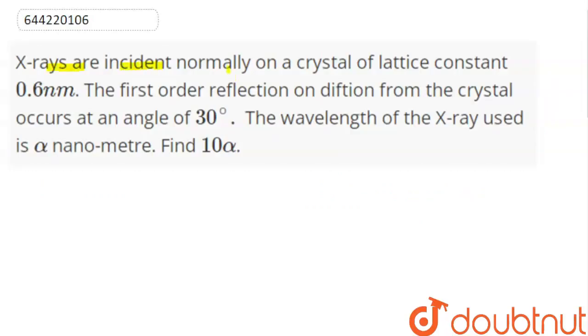X-rays are incident normally on a crystal of lattice constant 0.6 nanometer. The first order reflection from the crystal occurs at an angle 30 degrees. The wavelength of the x-rays used is alpha nanometer. Find the value of 10 alpha.